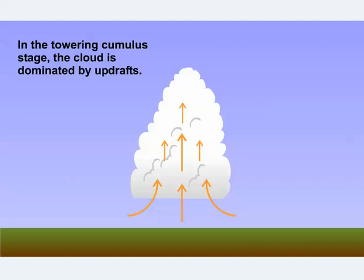In the cumulus stage, the cloud is dominated by updrafts as a cumulus-congestus or towering cumulus cloud develops. As updrafts accelerate, low-level air converges in from miles around to feed the updraft.